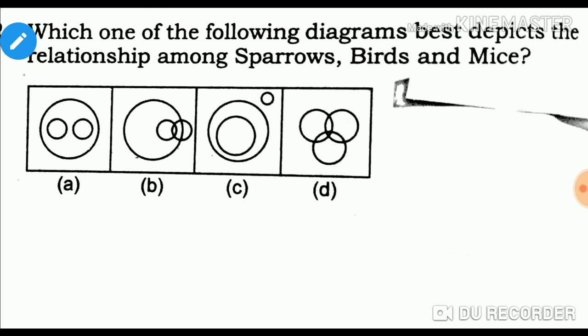The first type covers three types of relationships. These are shown through two types of photographs and pictorial representations.